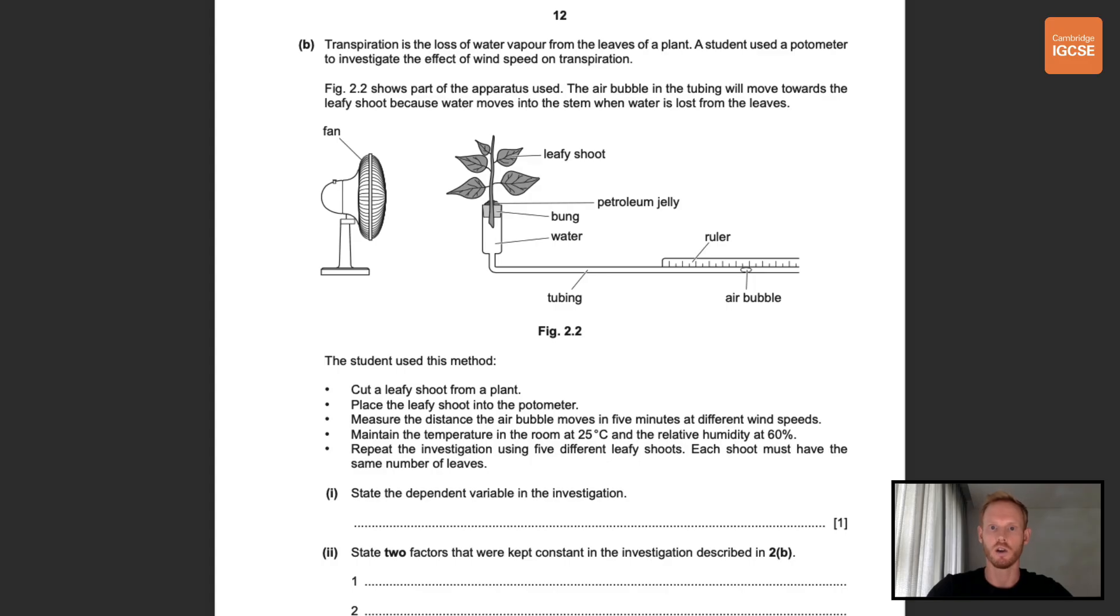Okay now on to part B which is on transpiration, topic 8.3. So transpiration is the loss of water vapor from the leaves of a plant. A student used a potometer to investigate the effect of wind speed on transpiration. Figure 2.2 shows part of the apparatus used. The air bubble in the tubing will move towards the leafy shoot because water moves into the stem when water is lost from the leaves. The student used the following method: cut a leafy shoot from a plant, place the leafy shoot into the potometer, measure the distance the air bubble moves in five minutes at different wind speeds, maintain the temperature in the room at 25 degrees and the relative humidity at 60 degrees, and then repeat the investigation using five different leafy shoots, and each shoot must have the same number of leaves.